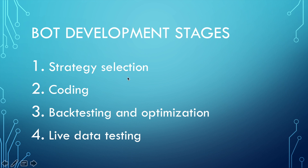First, strategy selection. It is the most important part. As I said, there is a huge number of strategies. In this tutorial, we will pick something simple. It will not definitely make you a millionaire over the months, but it will give you a basic understanding of algorithmic trading and the opportunity to improve an existing strategy or move to a more complex one.